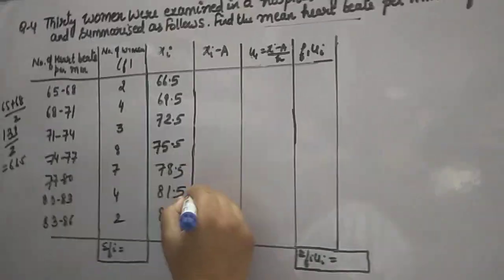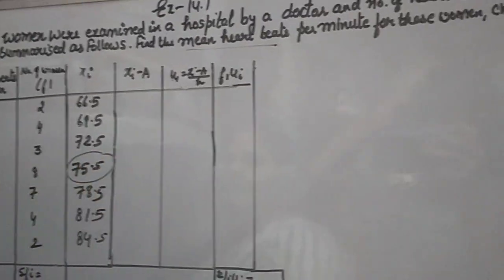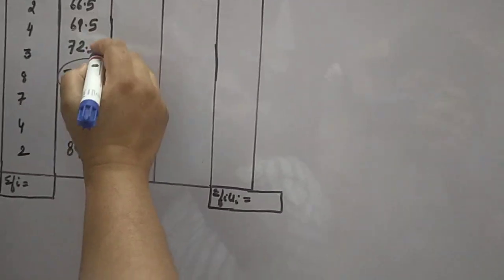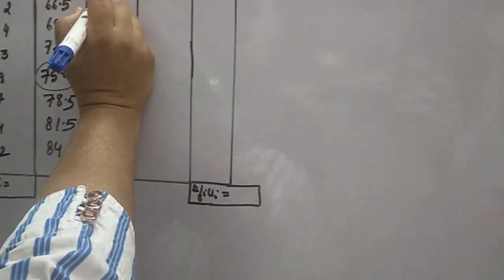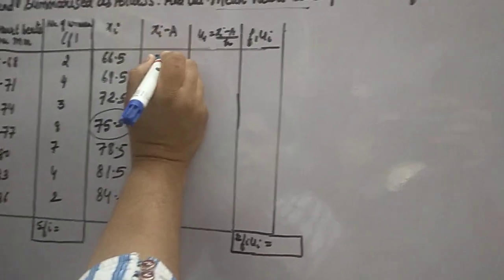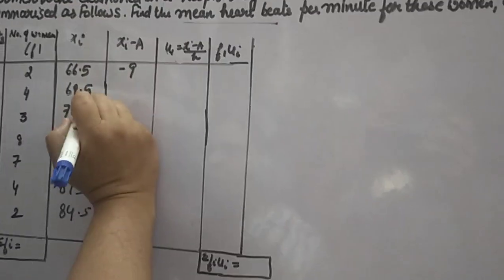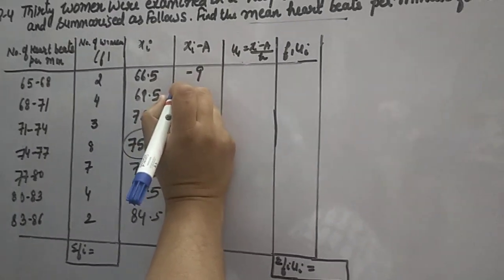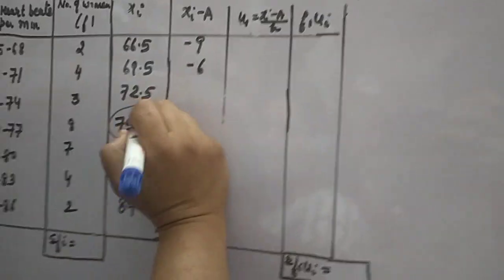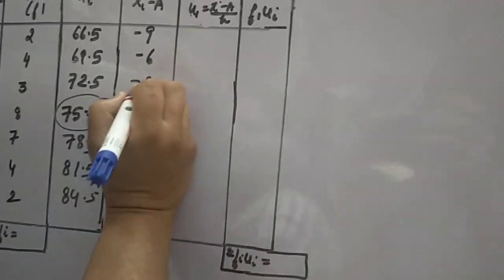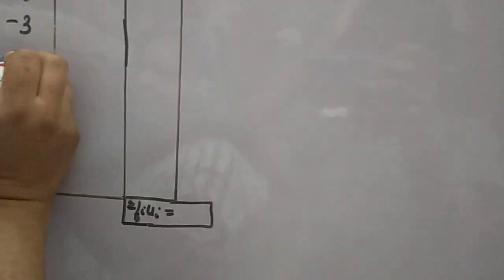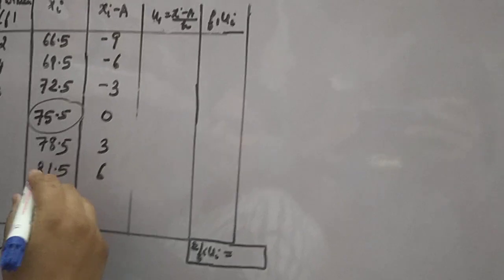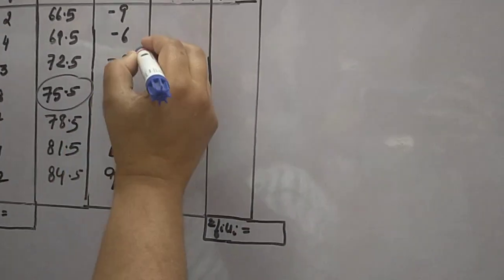Now we'll take an assumed mean. Let's take 75.5 as assumed mean A. So 66.5 minus 75.5 gives minus 9. Similarly, 69.5 minus 75.5 gives minus 6. Then we get minus 3. 75.5 minus 75.5 gives 0. Then we get 3, 6, and 9.